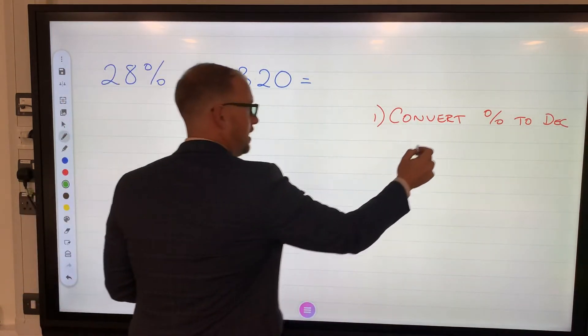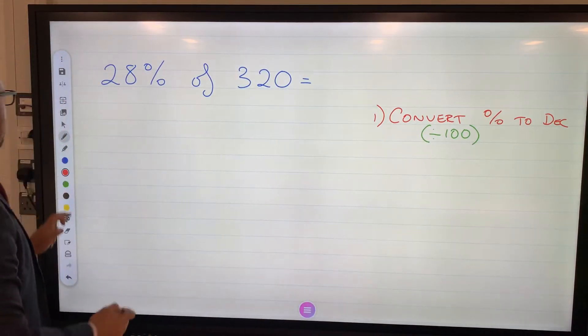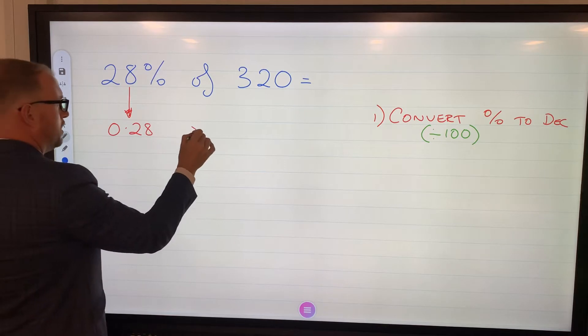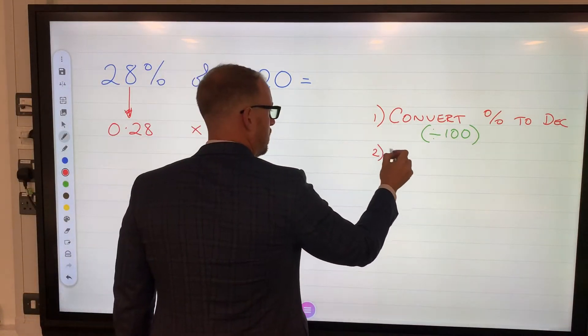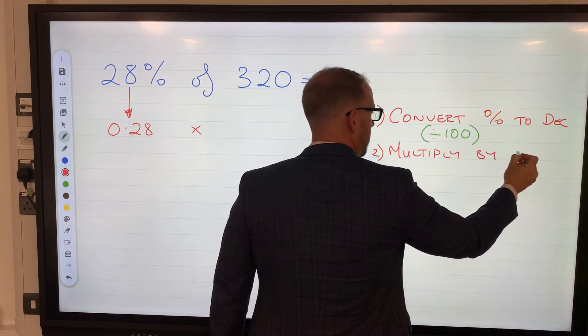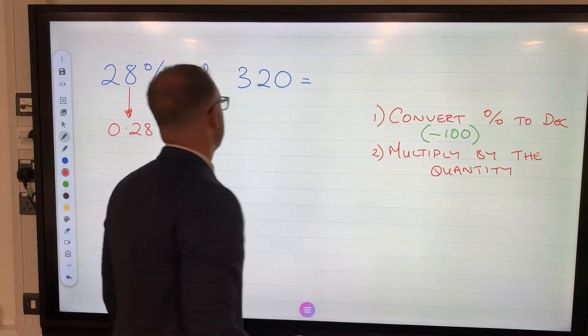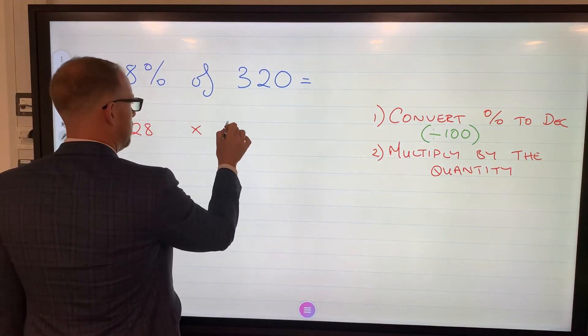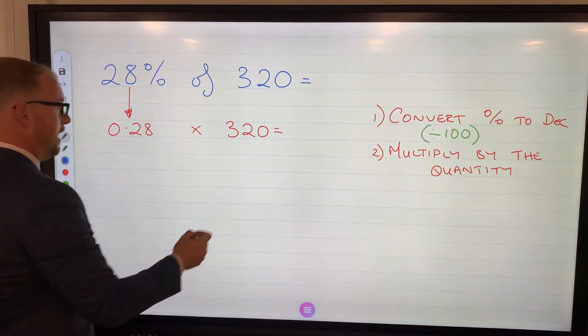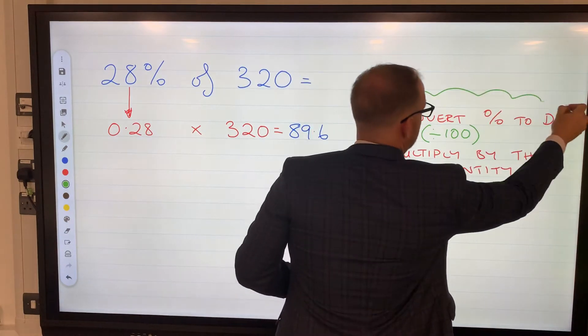A couple of really basic steps for this. Our first thing we've got to do is convert percentage to decimal. The way we do that is by dividing our percentage by 100. So then I've got 28, that'd be 0.28. Of always means times, so we're going to multiply by the quantity. The quantity is the number in the question which is 320. So do 0.28 multiplied by 320. Obviously you use a calculator and then you have 89.6. So that's just a quick recap of how to find the percentage of a quantity using a multiplying method.